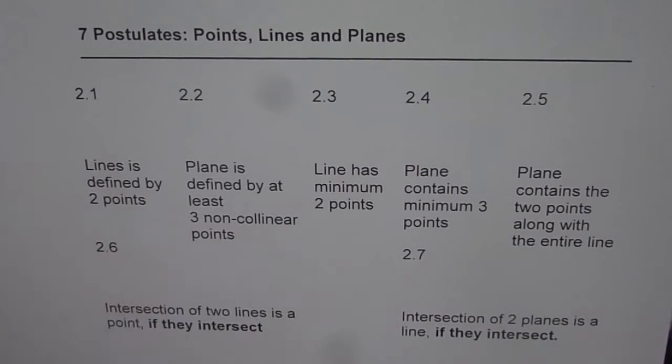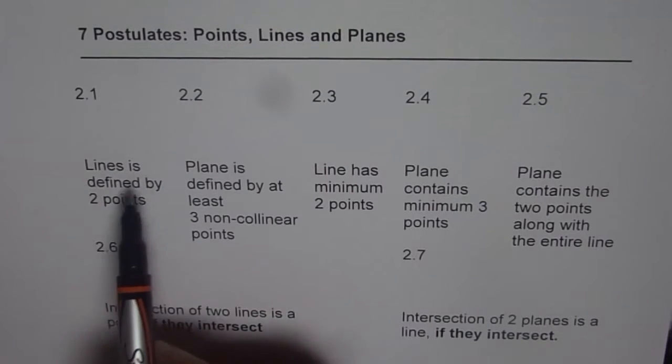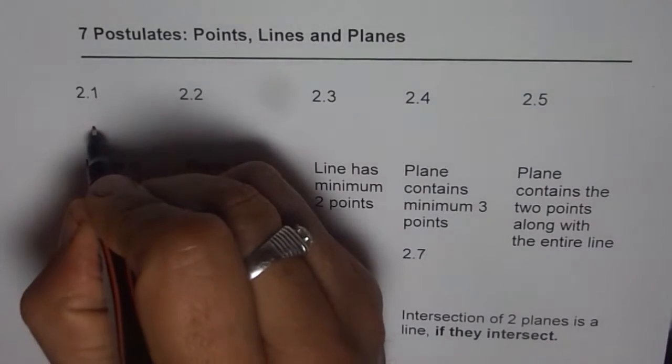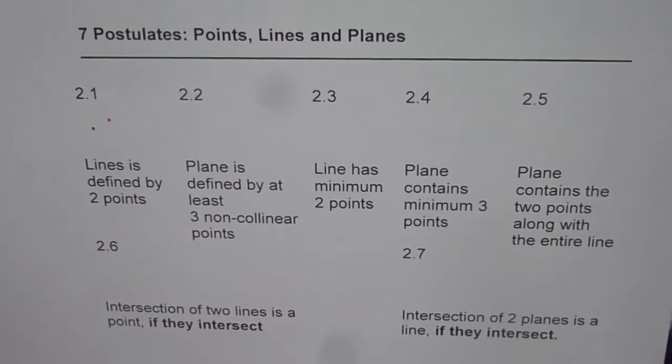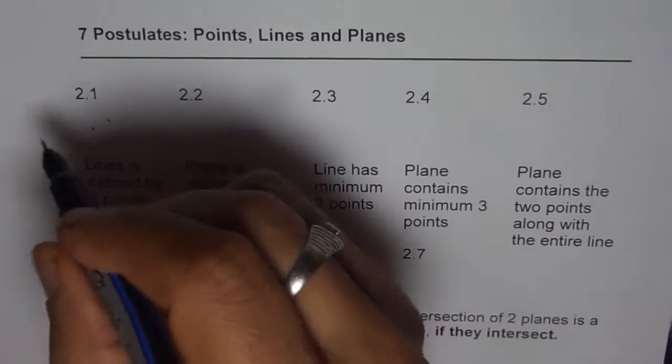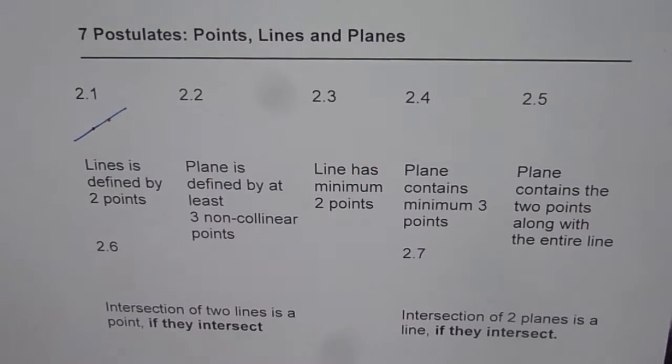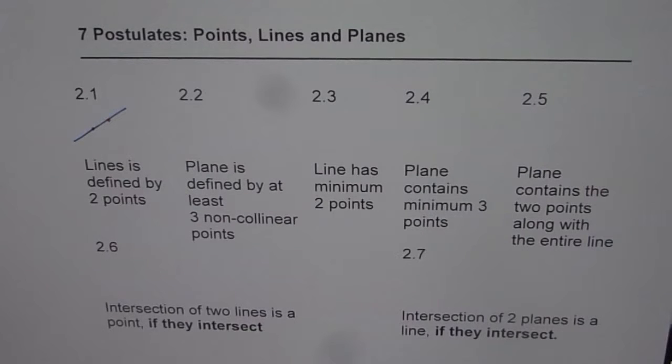We learned 2.1 is line is defined by two points. That is how we can translate what 2.1 is. The first postulate which we learned about points, lines and planes was that given two points then there is exactly one line which can go through them. A line is defined by two points.